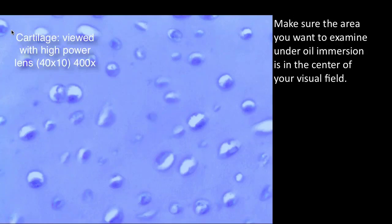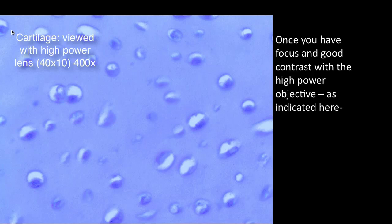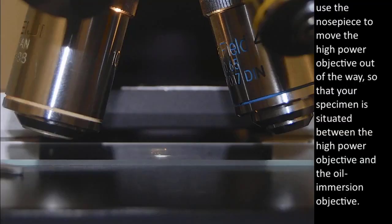Make sure the area you want to examine under oil immersion is in the center of your visual field. Once you have focus and good contrast with the high power objective, use the nose piece to move the high power objective out of the way so that your specimen is situated between the high power objective and the oil immersion objective.